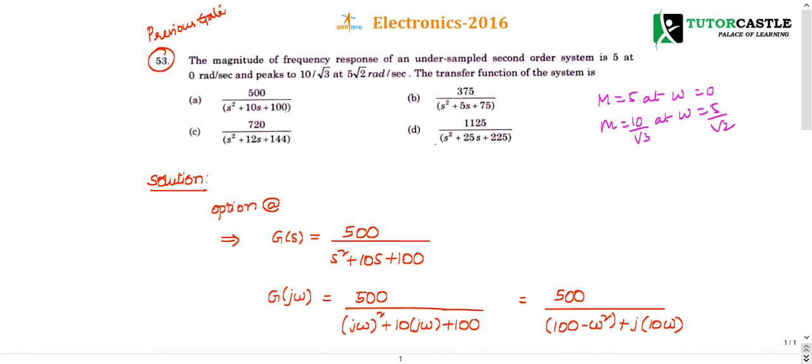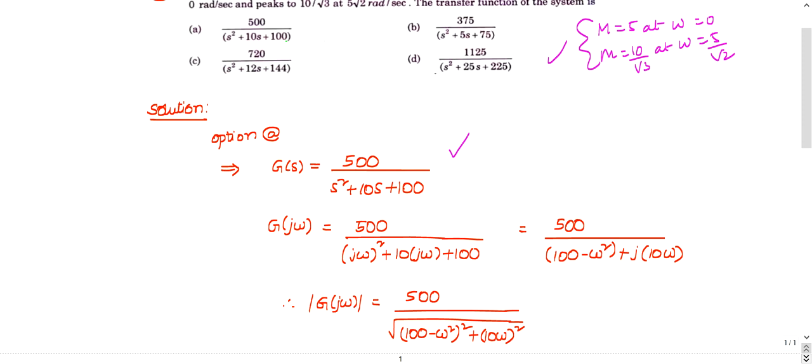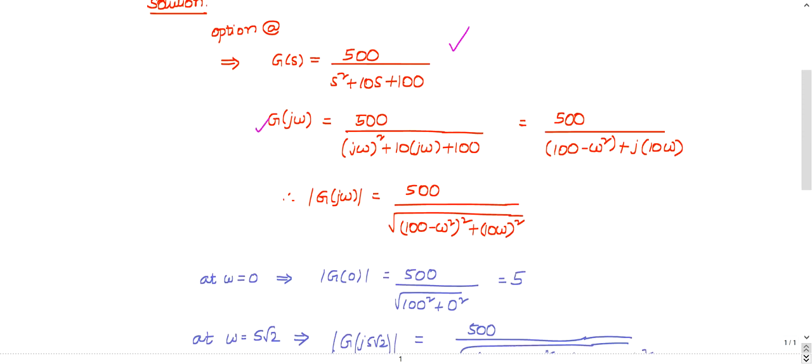You can substitute in the options to get the transfer function - that's an easy technique. Just check with option A first. This is a transfer function: convert from s domain to omega domain.